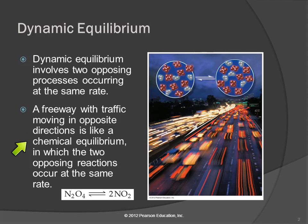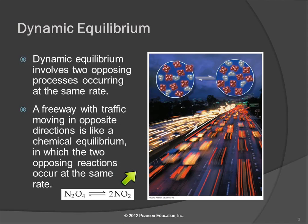A freeway is an example. Here we have a picture of a freeway with cars going north and cars coming south at the same rate. If we looked at the total number of cars at the south end and the north end of this road, we'd see the total number is the same, but it's not the same cars, because cars are moving from one to the other. This is an analogy for a dynamic equilibrium — something like N2O4 in equilibrium with 2NO2, where we use a double-headed arrow to indicate the reaction proceeds in both directions.